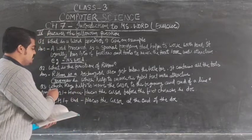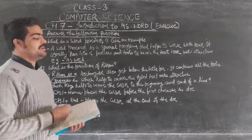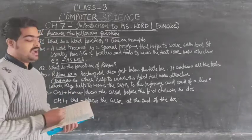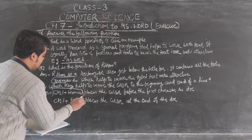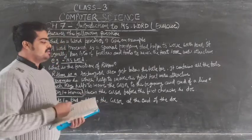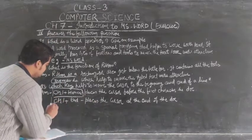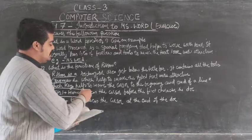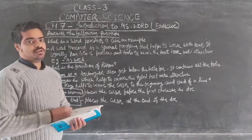Question three — which key helps to move the cursor to the beginning or end of the line? The Ctrl+Home key places the cursor before the first character in the document, and the Ctrl+End key helps to place the cursor at the end of the document.